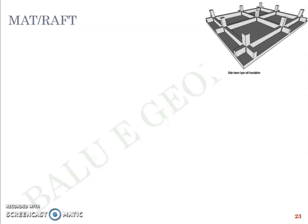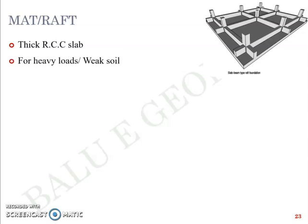The next type of shallow foundation is a mat or raft. The raft or mat foundation is a big slab resting beneath the ground surface on which column loads are transferred through a beam structure. It is fundamentally a thick reinforced concrete slab, recommended for cases with heavy loads or weak soil. An added advantage is that it reduces the chances of differential settlement because it acts as a very large structure, redistributing loads over a wide area.